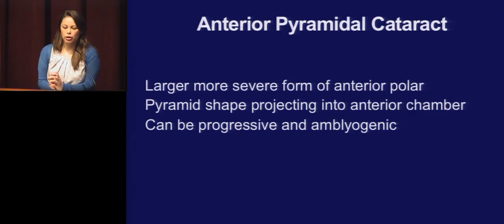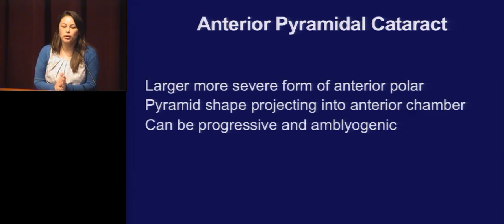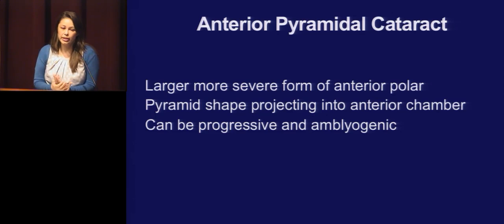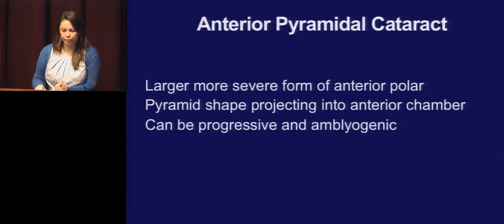An anterior pyramidal cataract is just a larger, more severe form of the anterior polar. It's a pyramid shape that protrudes into the anterior chamber. These can be progressive, so you want to follow them closely.